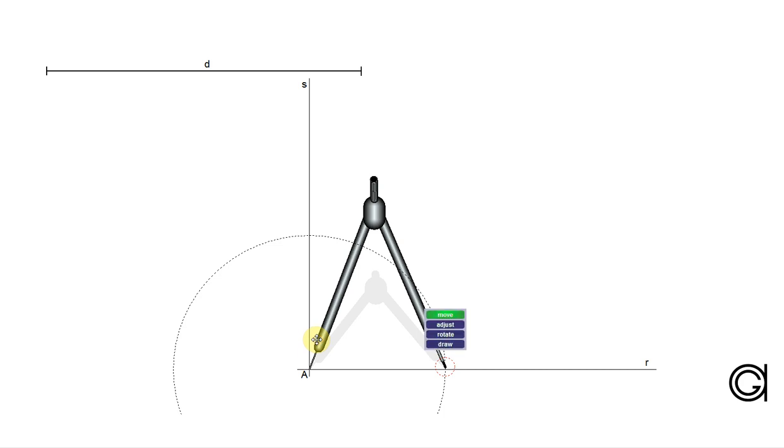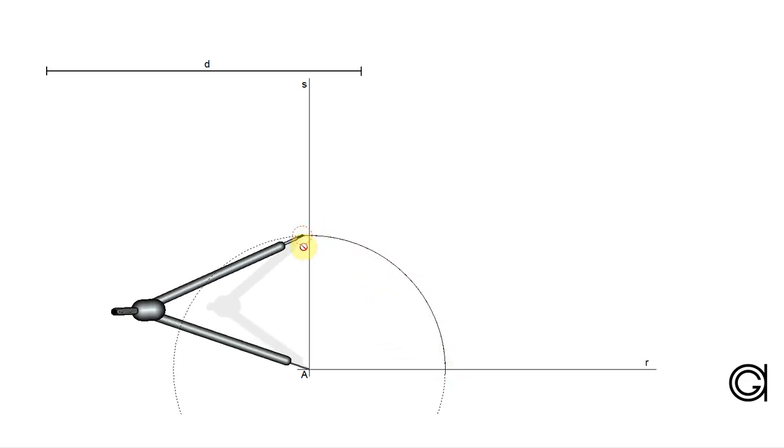Now setting our compass on vertex A with any radius, we scribe an arc to cut the two previously drawn lines at two points.